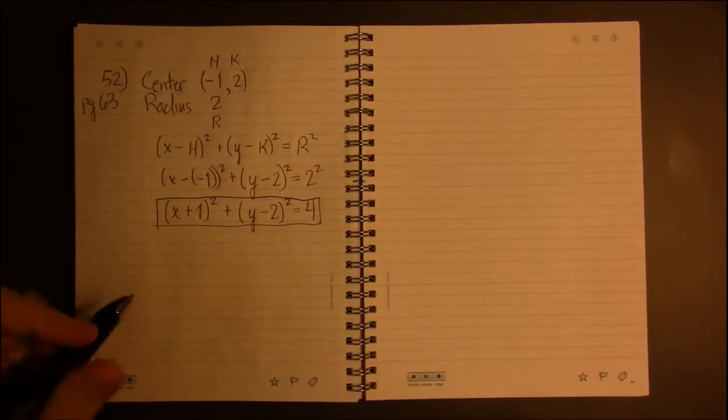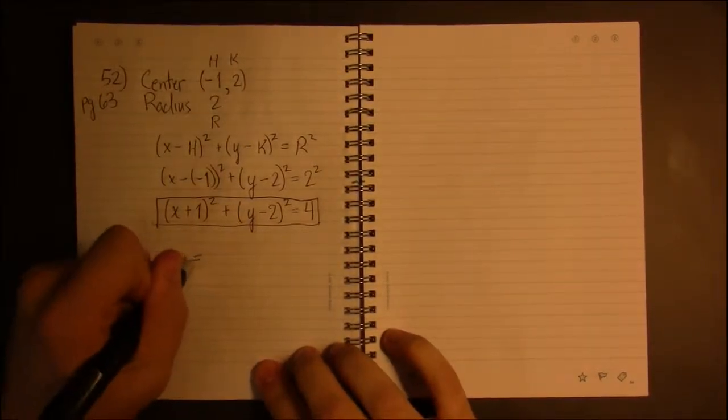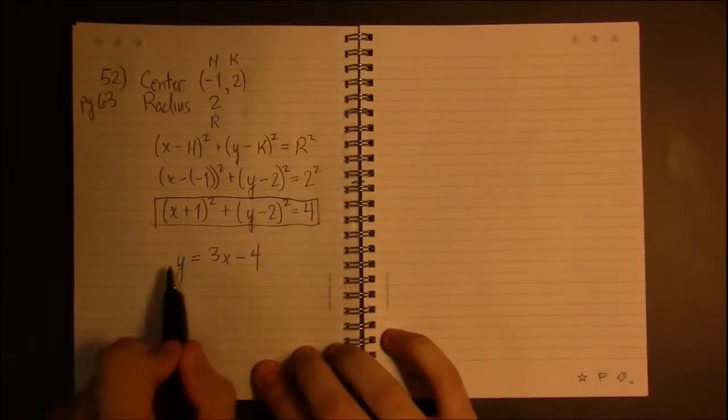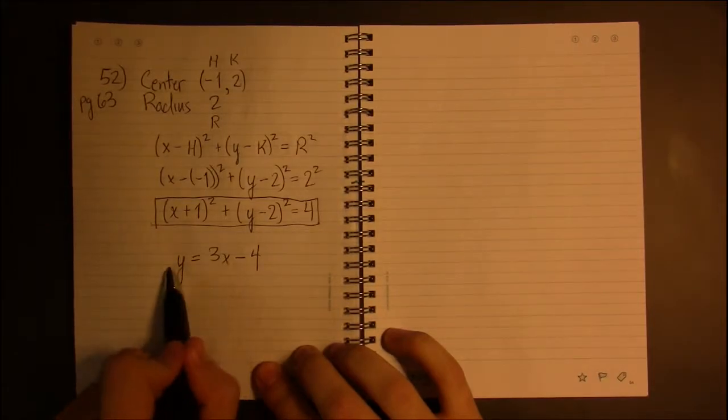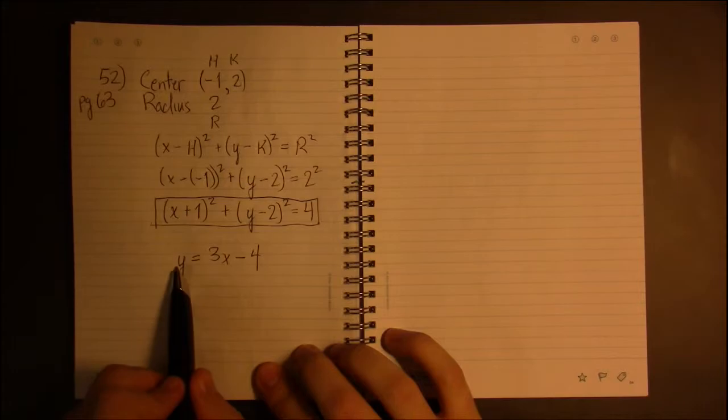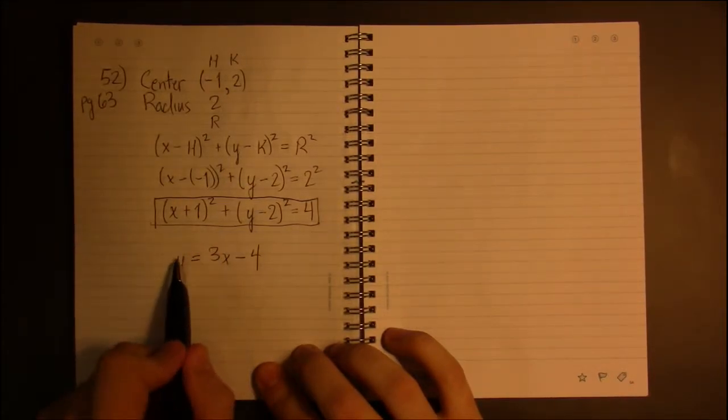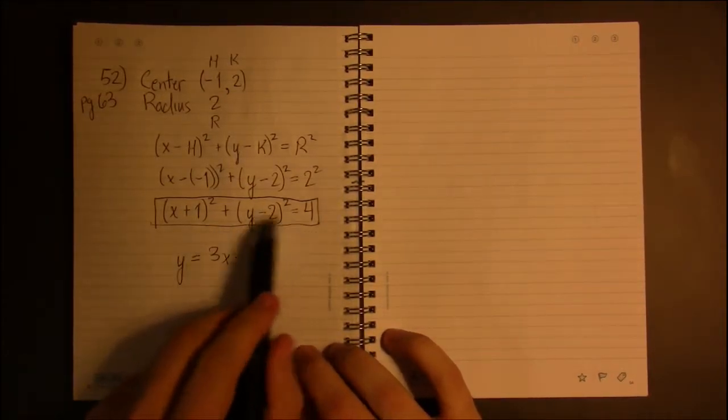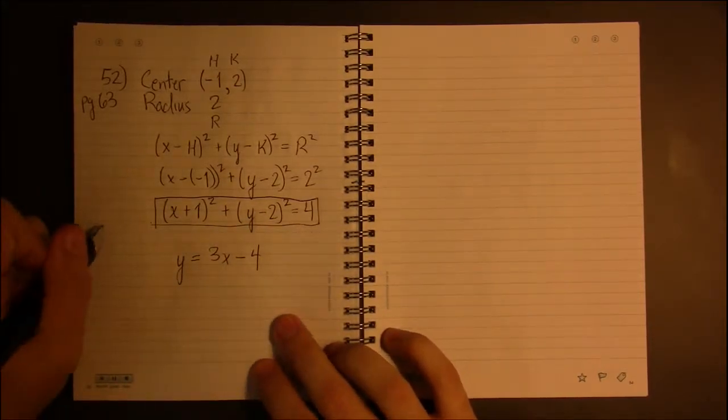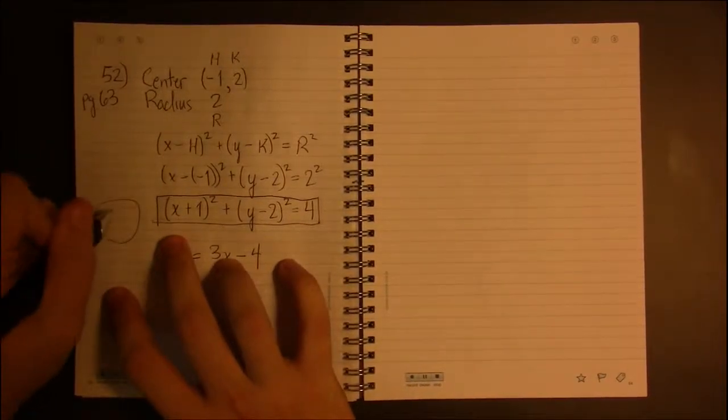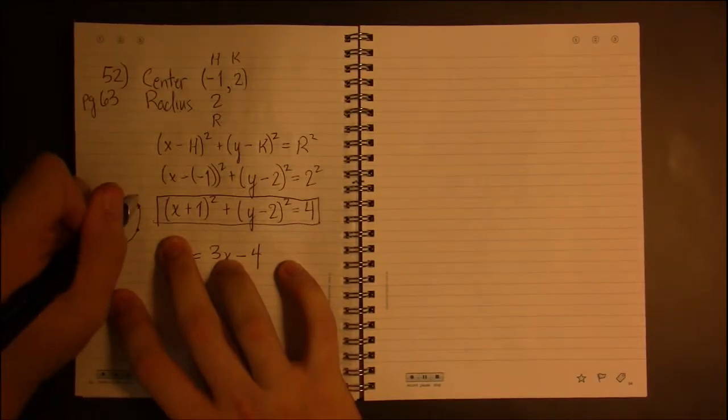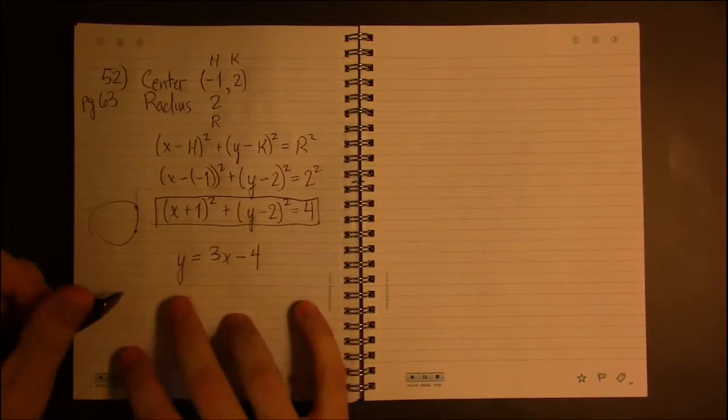So just like with a line, X and Y are left as variables because there's a relationship between these two variables. If you know the X value, you can get the Y value. It's the same thing here. If you know the X coordinate of a point on the circle, this equation will allow you to find any Y values that correspond to that particular X.